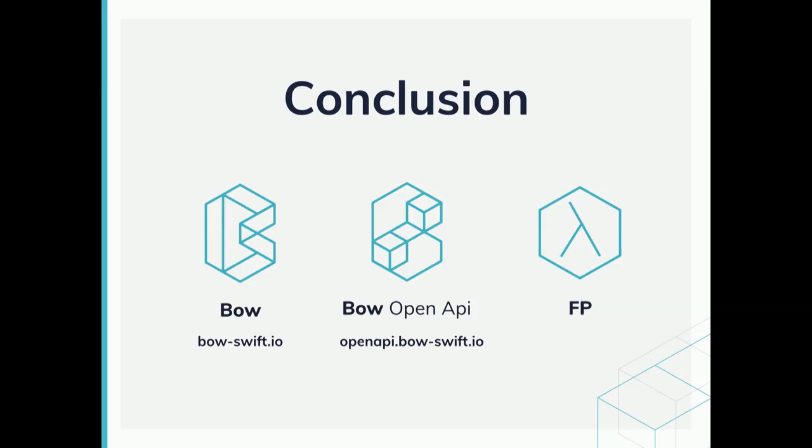Most of the refactorings that I have shown in this talk are equally valid if you are using Combine or any other streaming library, or even in other parts of your code. And that is the key lesson that you need to take from this talk: functional programming provides universal abstractions and techniques that can bring value to your code regardless of the libraries, technologies, or languages that you choose. Functional programming can be and will be a game changer. Thank you very much.